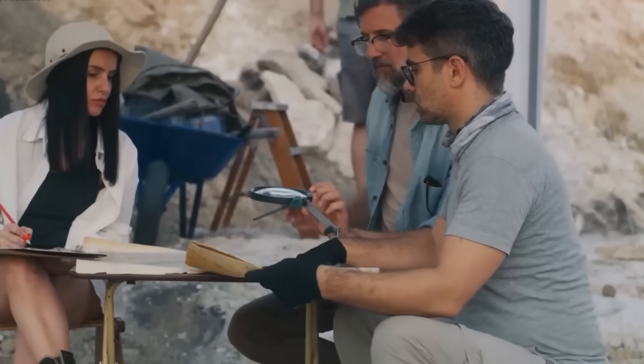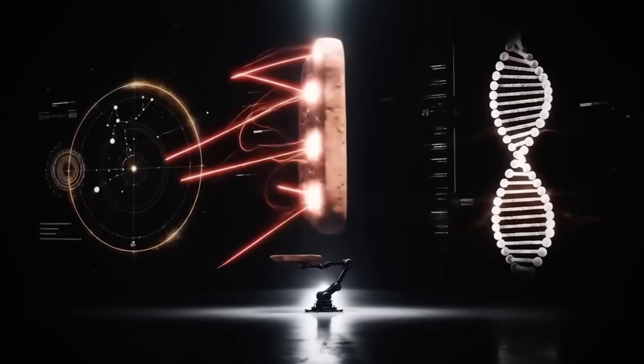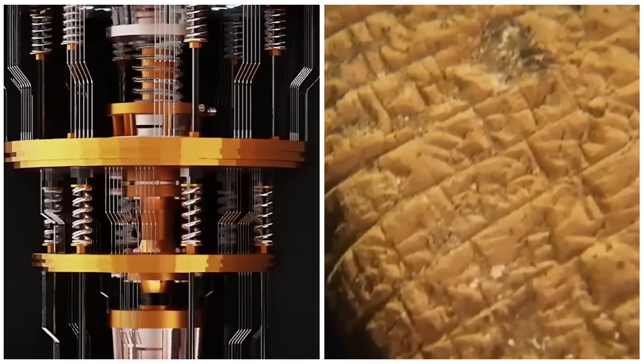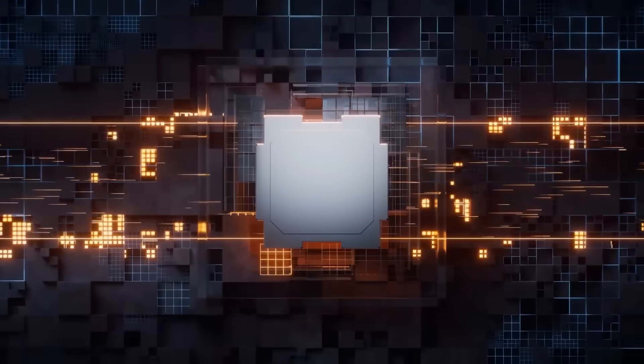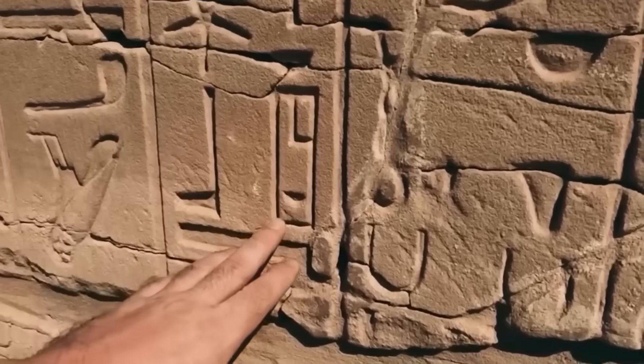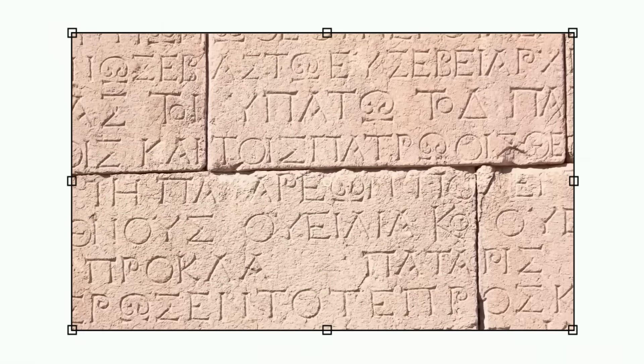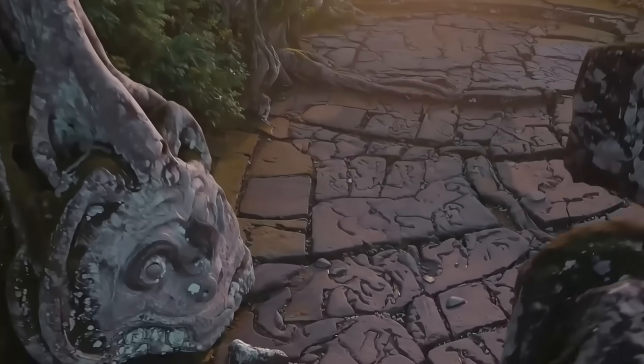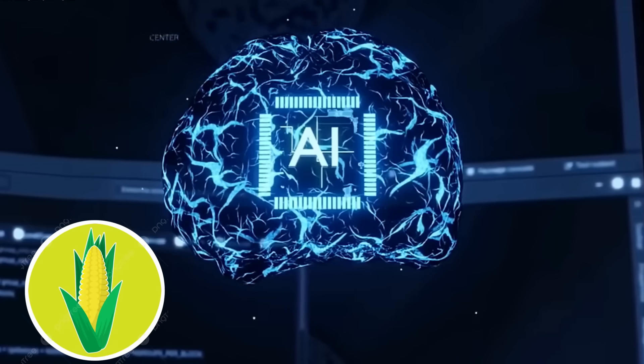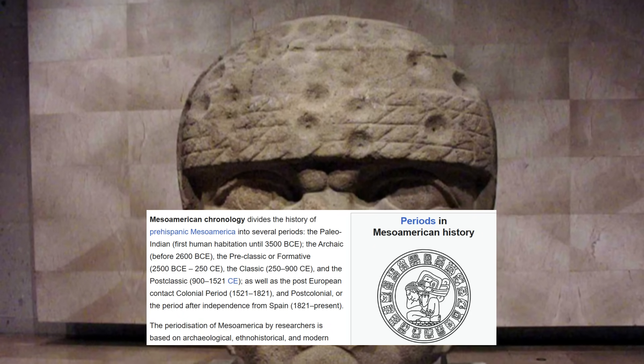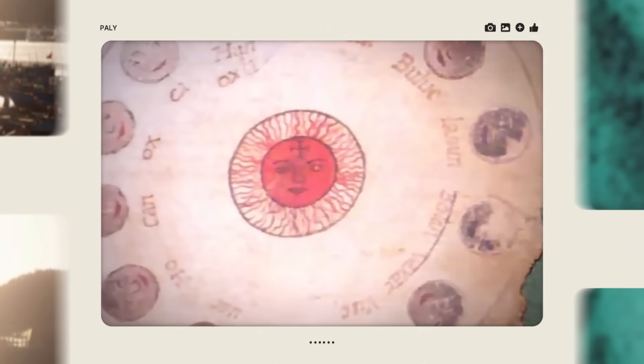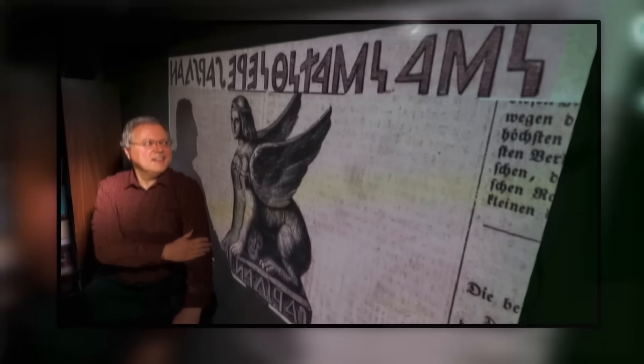Here's what reportedly happened when researchers fed the Kaskajal block into their quantum AI system. The machine analyzed every symbol, every position, every repetition. Within hours, it began outputting something no human had seen before. Complete phrases in what appeared to be Proto-Mixezoquian, the ancient language family spoken in this region. The AI identified symbols for maize, jade, fish. Classic Mesoamerican ceremonial items.